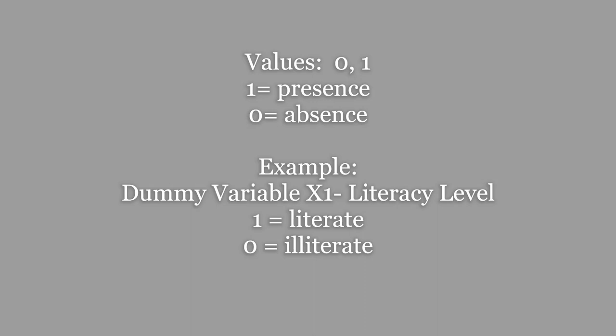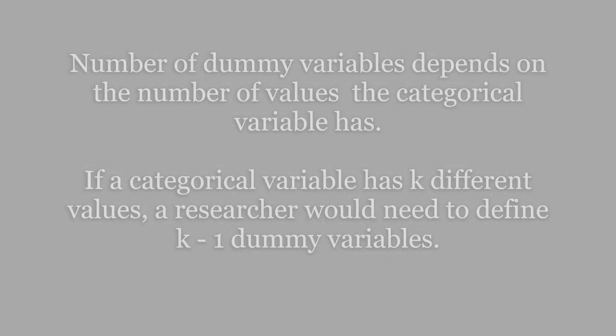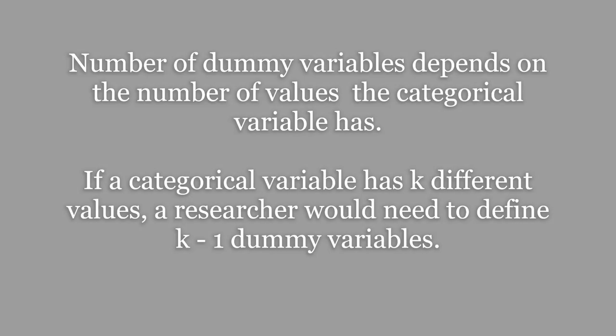For example, if the dummy variable x1 is the level of literacy, then 1 means that the person is literate and 0 represents illiteracy. The number of dummy variables depends on the number of values the categorical variable has. If a categorical variable has k different values, a researcher would need to define k-1 dummy variables.